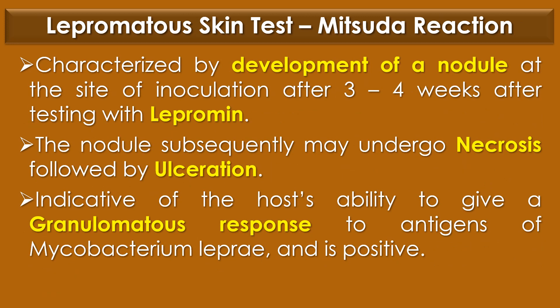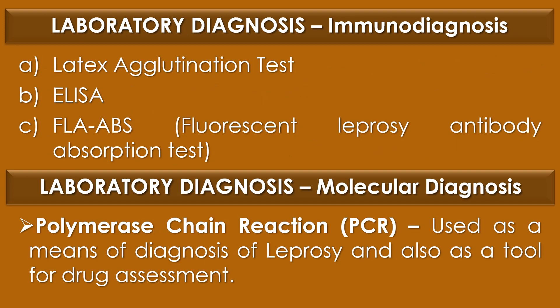The Mitsuda reaction is characterized by development of a nodule at the site of inoculation after 3 to 4 weeks of testing with lepromine. The nodules may subsequently undergo necrosis followed by ulceration. This reaction is indicative of the host's ability to give a granulomatous response to antigens of Mycobacterium leprae. The immunodiagnosis methods used include latex agglutination test, LHR test, and FLA-ABS test or fluorescent leprosy antibody absorption test. Regarding molecular analysis, polymerase chain reaction or PCR can be used as a means of diagnosis of leprosy and as a tool for drug assessment.